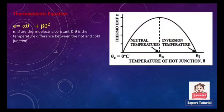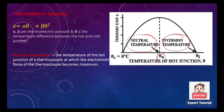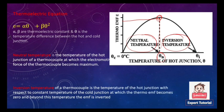Looking at the graph of thermo EMF versus temperature of the hot junction, there are two important terms: neutral temperature and inversion temperature. The neutral temperature θ_n is the temperature at which the thermo EMF is maximum. The inversion temperature θ_i is the temperature at which the thermo EMF becomes zero, and beyond this temperature the EMF is inverted.